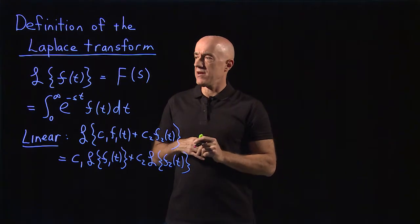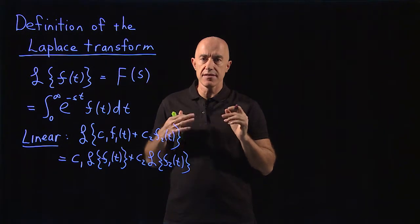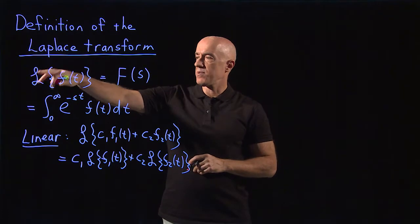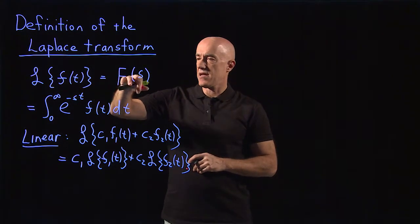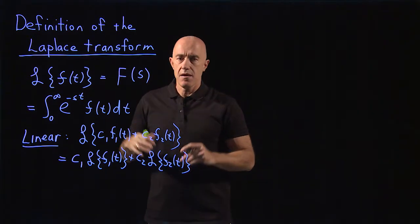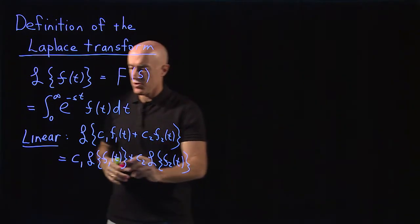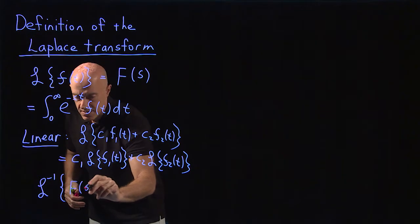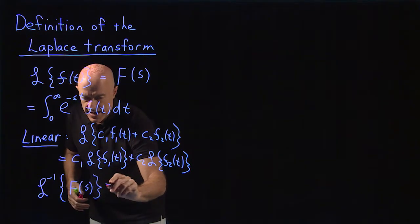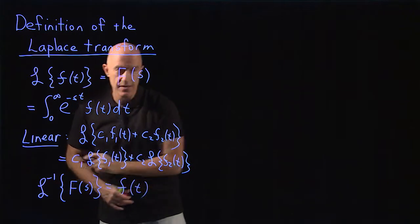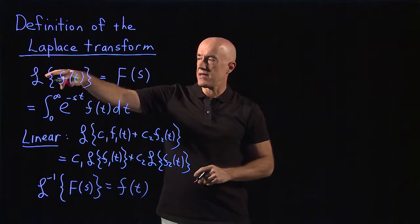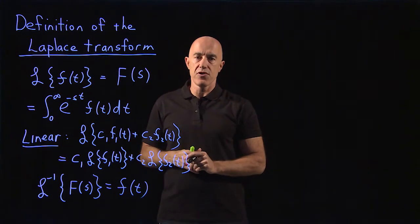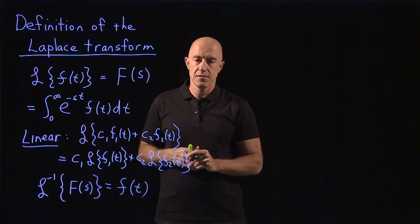There's one more property of the Laplace transform necessary for our solution. You can take the Laplace transform of f of t to get another function, capital F of s. The transform is invertible — you can also take the inverse Laplace transform of F of s to get back the function f of t. The Laplace transform is computed by integration, while the inverse Laplace transform we will do using a table.